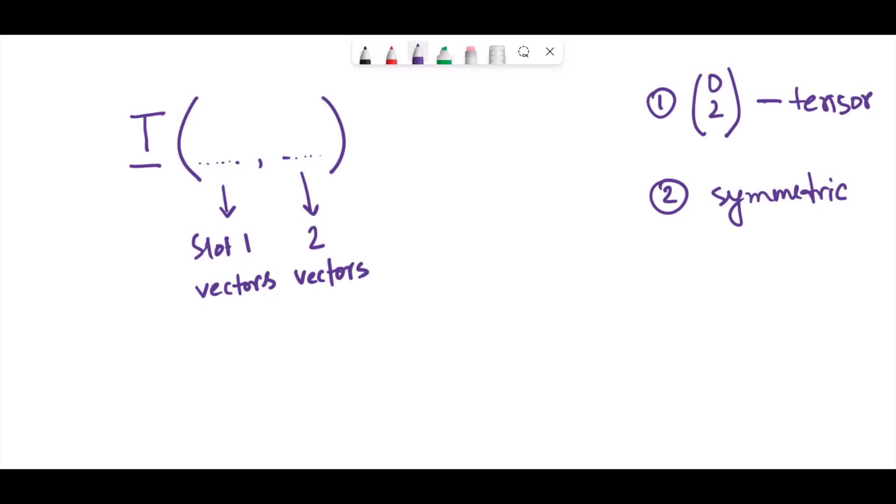Then the next question would be, what does this tensor give us? I mean, what is the information content in this tensor? What does it describe?